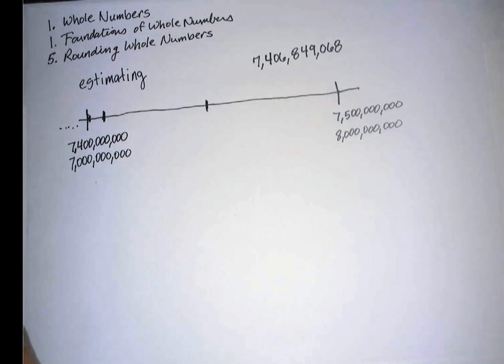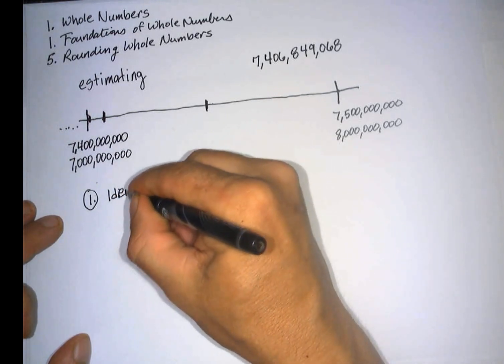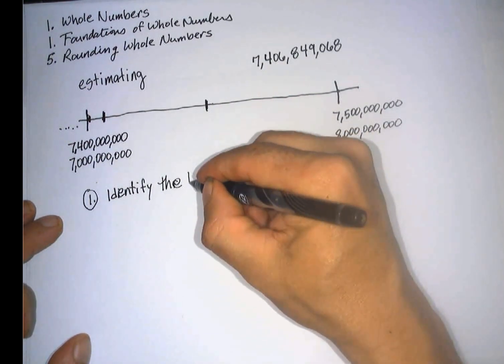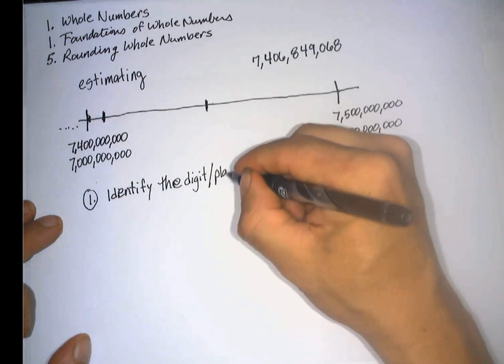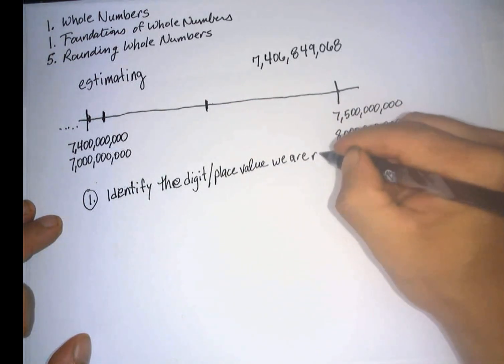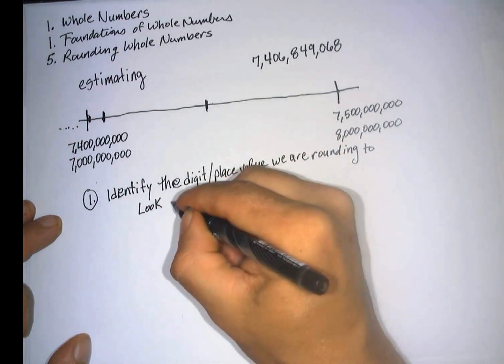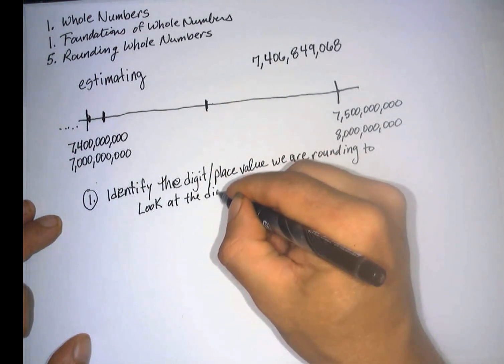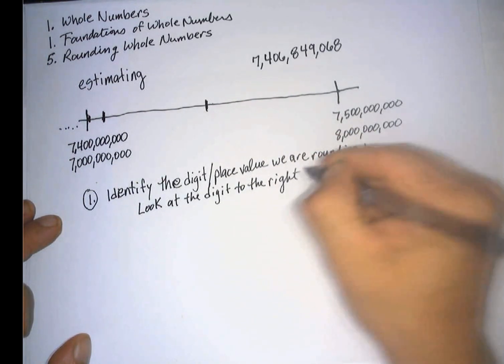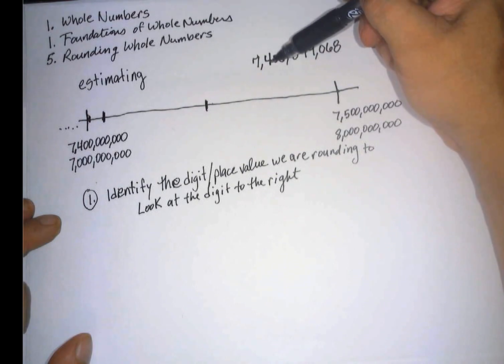So the formal mathematical step for rounding. The first thing we're going to do is identify the digit, identify the digit we are rounding to, or place value, I guess we could call it the place value we are rounding to. And then we're going to look at the digit to the right. So if we're going to round this number to the billions, the billions place, we find the digit we're rounding to, and we're going to look to the digit to the right. So we're going to look at 4.